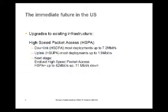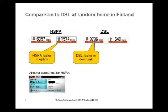That said, top speed is important as an indicator of what's possible. HSPA is not a dead end — it's possible to go further. People are talking about 42 megabits downlink and 11 megabits uplink, and perhaps even more. Here's a random example from a home in Finland showing real-world measurements — it's not David's home.